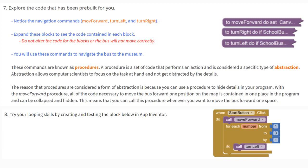Let's go ahead and try our looping skills by creating and testing the block in our App Inventor. We'll be creating an event handler so that when the start button is clicked, we will call the bus to move forward, and then we're going to use a loop to get it to turn left. Let's go ahead and build this and see what happens.